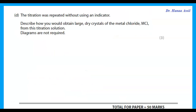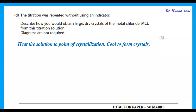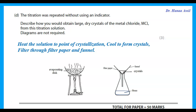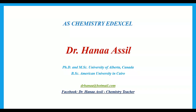The titration was repeated without an indicator to obtain large dry crystals of the metal chloride from the titration solution. Heat the solution to the point of crystallization, then cool to form crystals. Filter the crystals through filter paper and funnel, then dry the crystals between filter papers to obtain dry crystals of the metal chloride. That is the end of this paper — I hope this was useful to you. Please share the video, and thank you for listening.